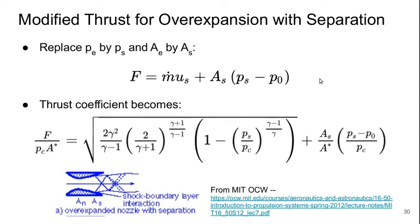Because whatever happens in the flow after this, the changes in area are no longer pushing against the walls of the nozzle and therefore are not contributing to thrust. So then we get an updated expression for the thrust coefficient in terms of PS and AS instead of PE and AE.